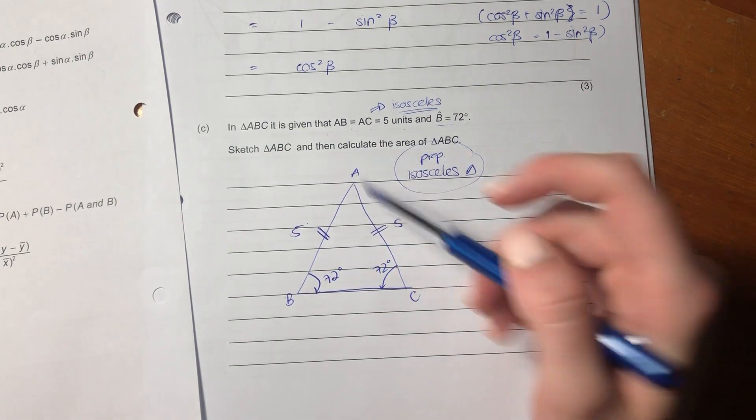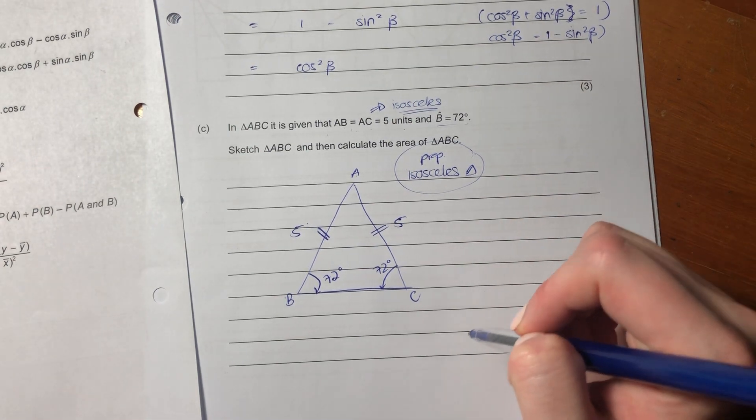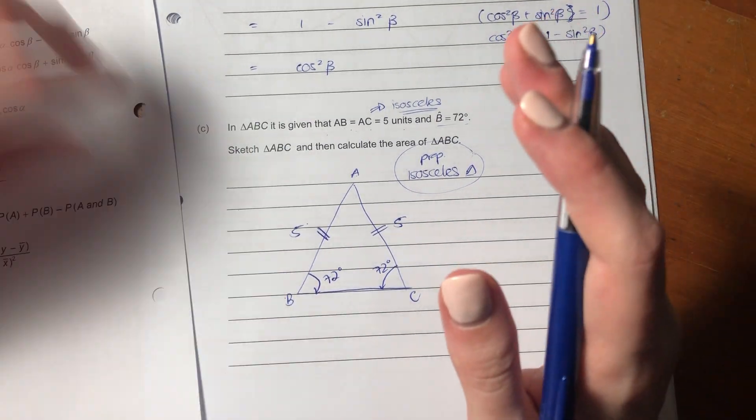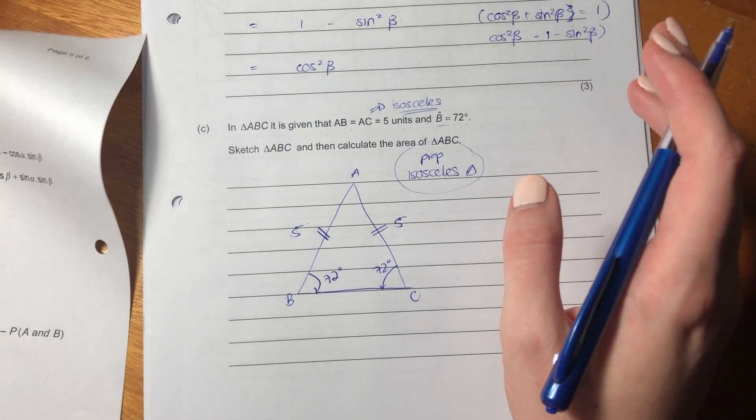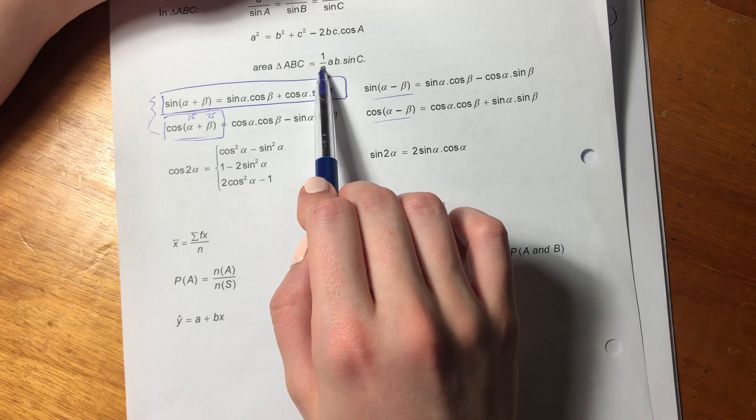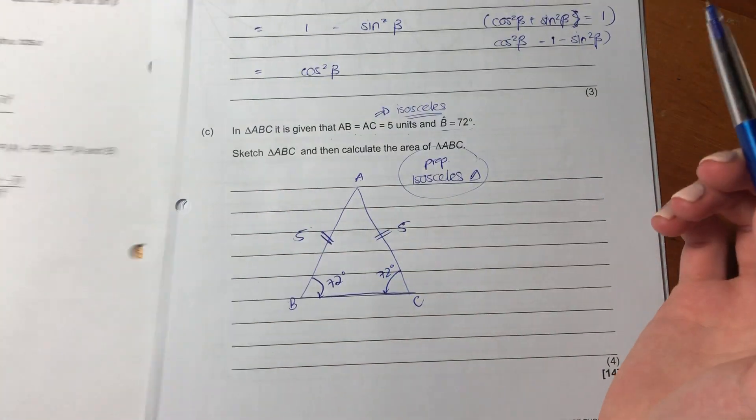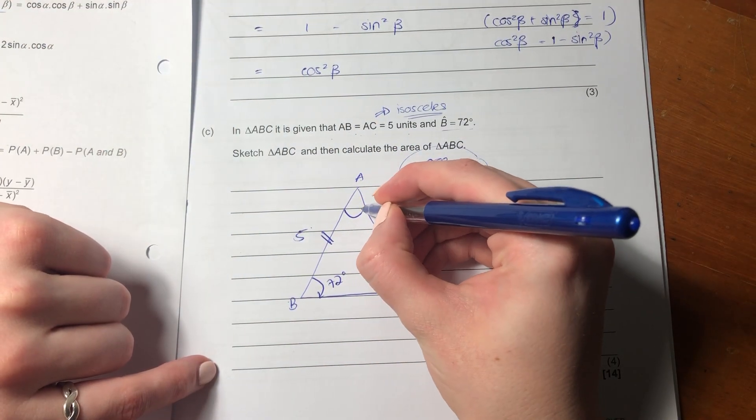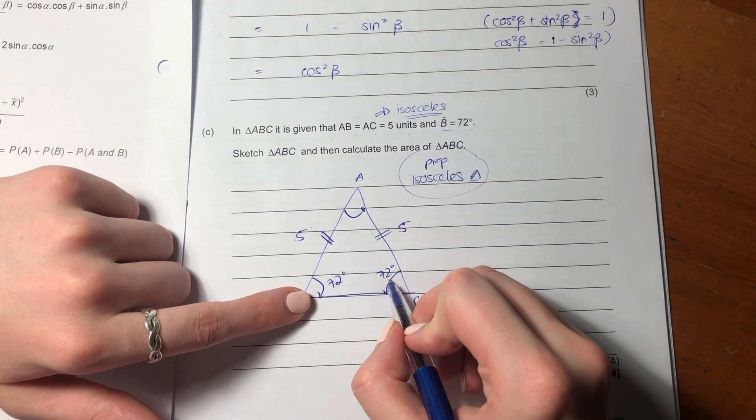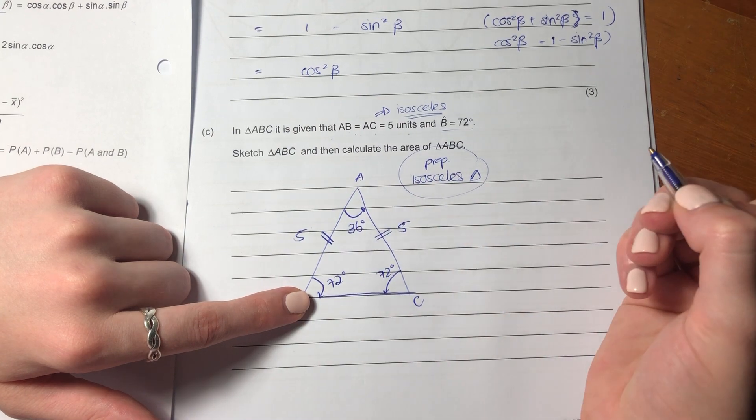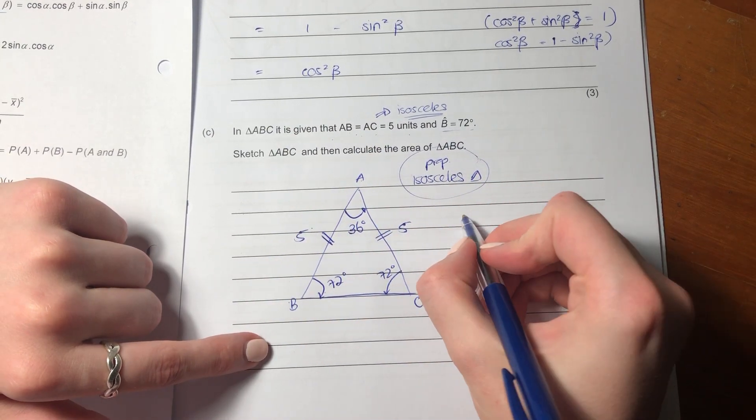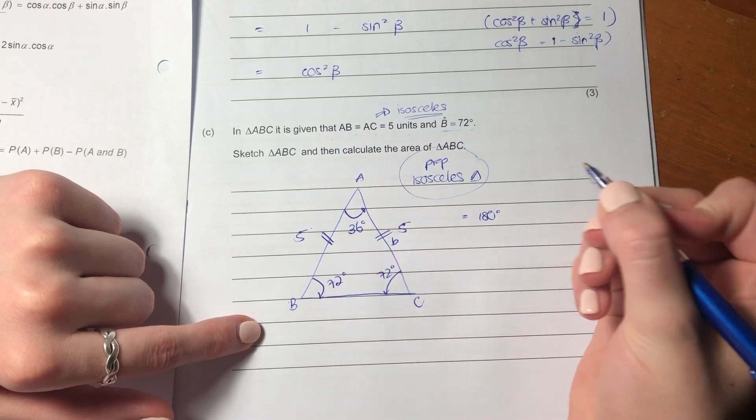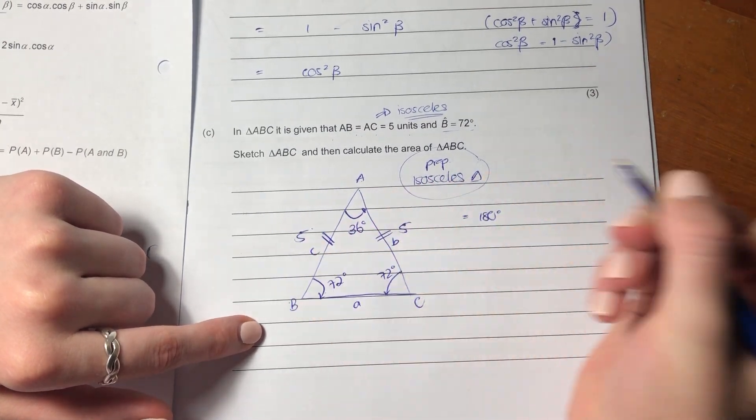So it says sketch ABC and then calculate the area. Now when you think about the area, you could be saying how must I do that because I'm thinking half base times height. But remember, we can also work out the area of a triangle using this formula. So now it says half AB sine C. So now you could be saying, oh dear, what does that mean? So let's first calculate this angle here. If this is 72 and this is 72, then this has to be 36 because remember all the angles in a triangle have to equal 180. So if you add all of those up now, equals 180. So this little side is B, this little side is A, and this little side is C.